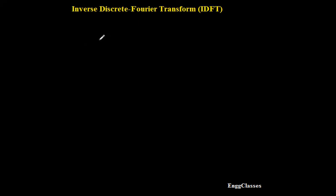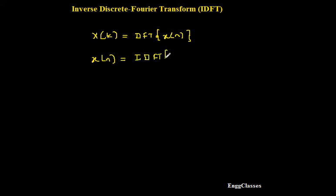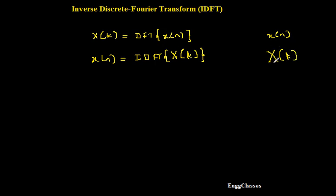Before considering the derivation, I will represent x of k. x of k is DFT — that is discrete Fourier transform — of the input signal x of n. So I want x of n, which must be the inverse DFT, that is IDFT, of x of k. Always be aware: x of n uses small letter x and small letter n — that is the discrete time signal. x of k uses capital X and small k. This representation we must be aware of in the videos to come as well.